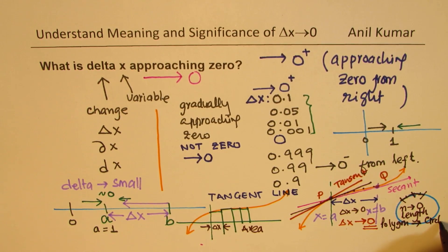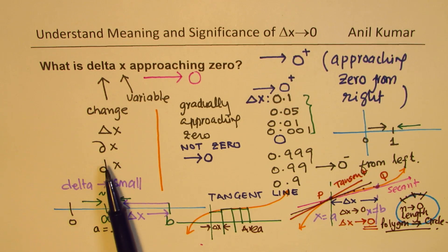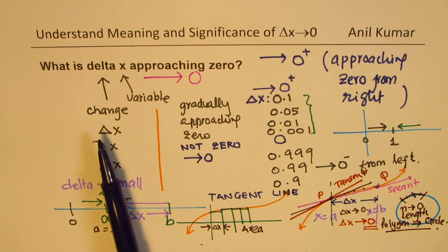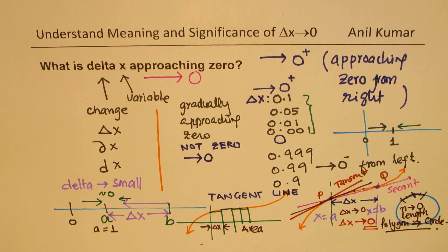I hope you got a clear idea of the significance of what is Delta X approaching 0. To begin with, you have to be very clear about this particular concept. We just focused on Delta X. Talking about the other Delta symbols will be taken up later when we are talking about derivatives. Feel free to write a comment, share your views, and if you like and subscribe to my videos, that'd be great. Thanks for your time, and all the best.